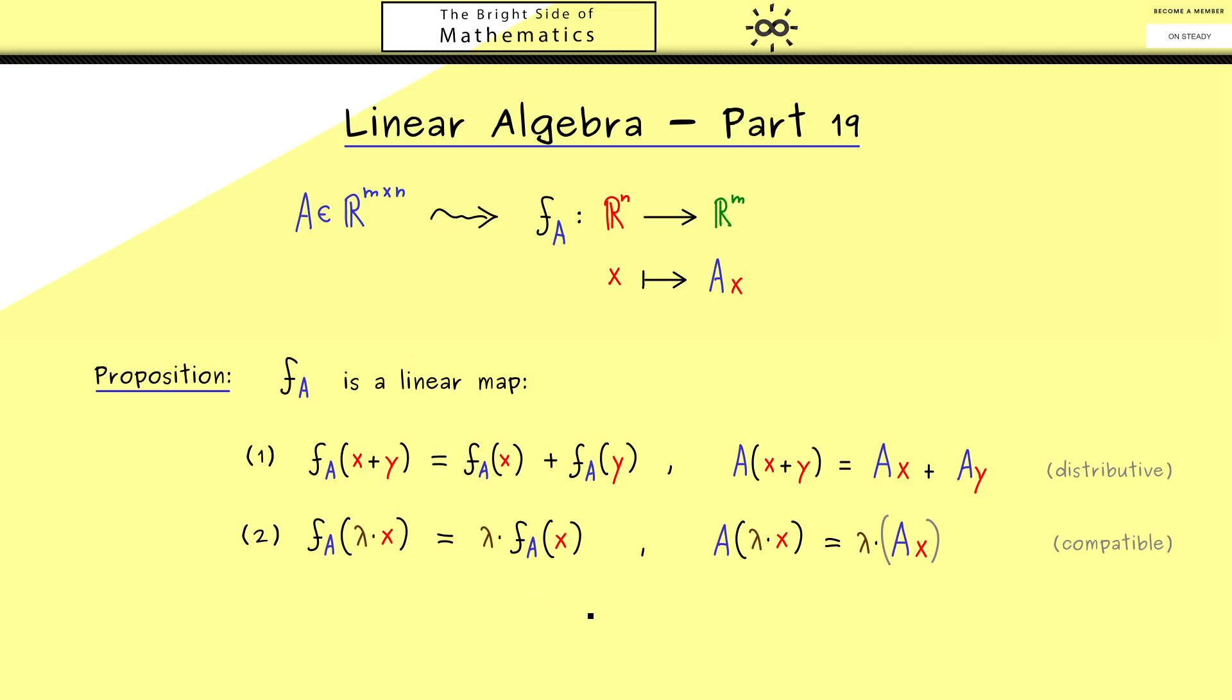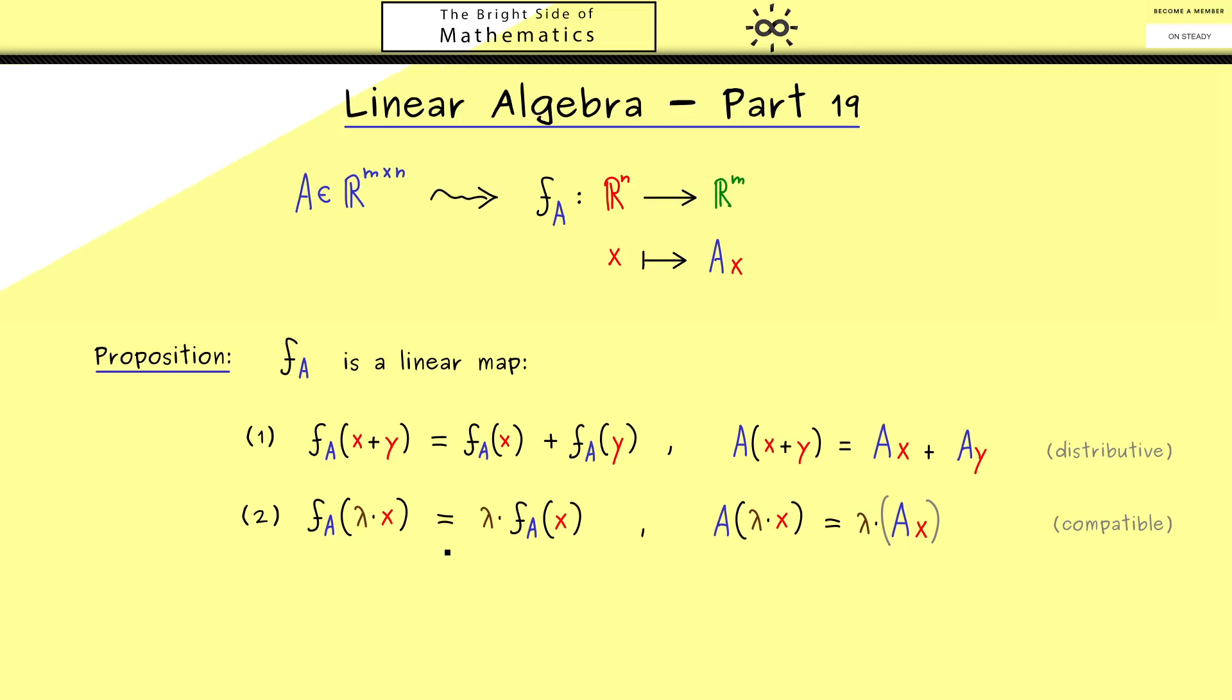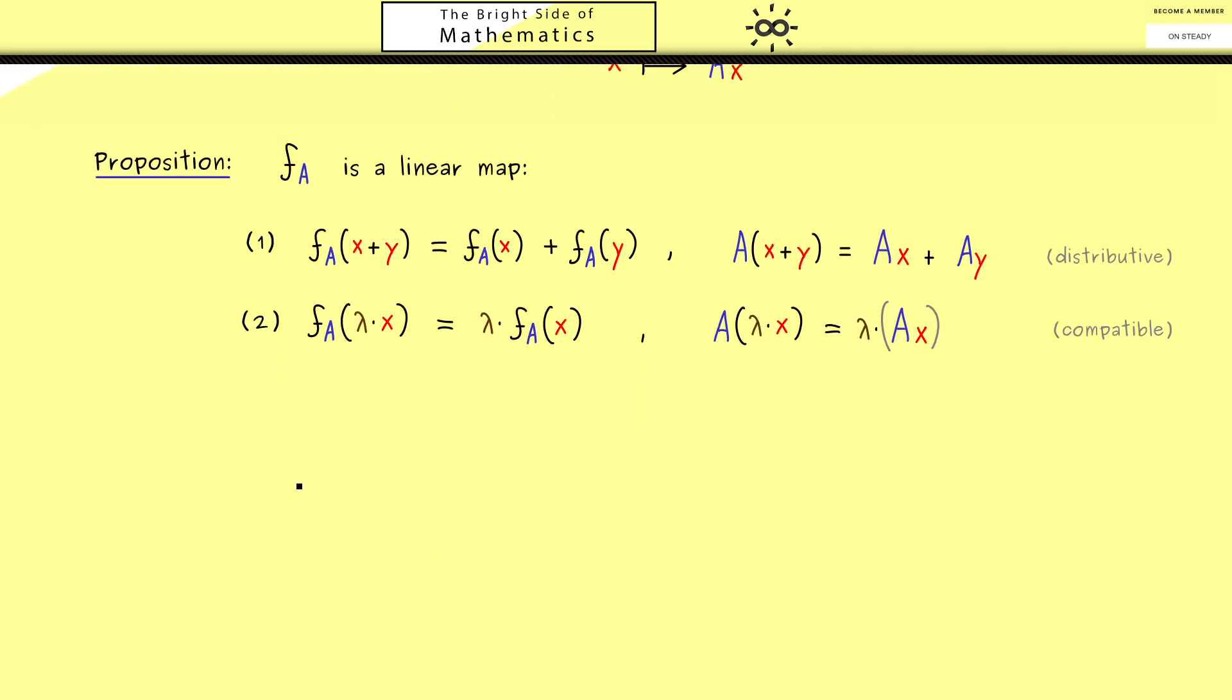Now, maybe in order to understand this property, let's look at a two dimensional example. This means we want to choose a matrix A with two columns. And as always let's call the columns A1 and A2. And now we apply this matrix A from the left to a vector x and a vector y. This means both vectors also need two components now.